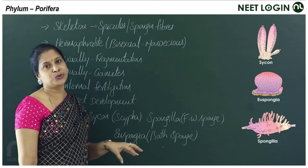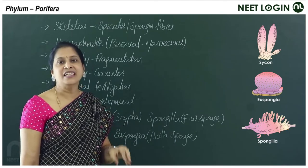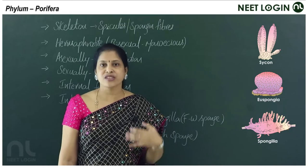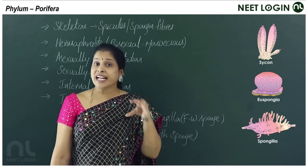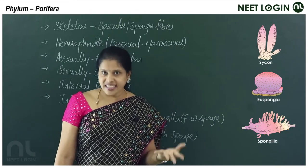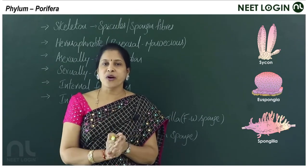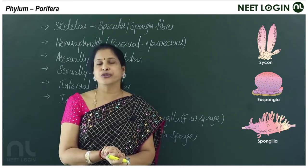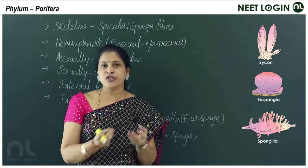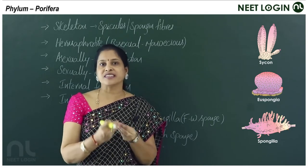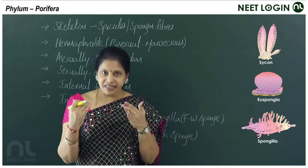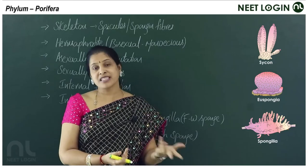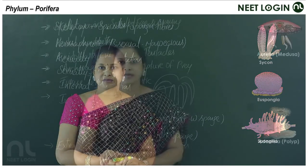You need to learn the examples and key points: the type of fertilization, type of development, and the unique feature of the phylum Porifera. Focus on a few key points and compare across phyla — though memory-based, this chapter becomes easier with a comparative approach. The next phylum is Coelenterata or Cnidaria.